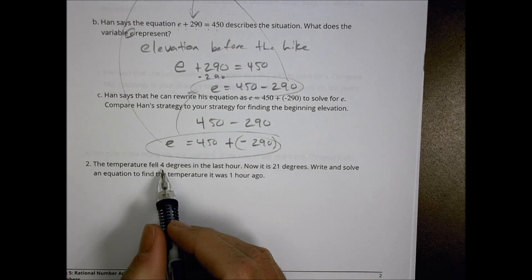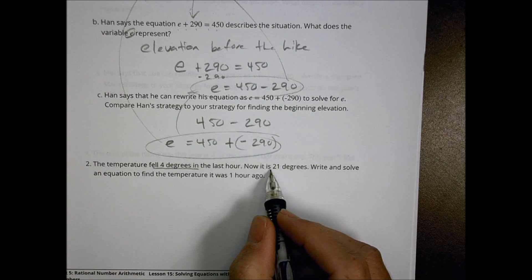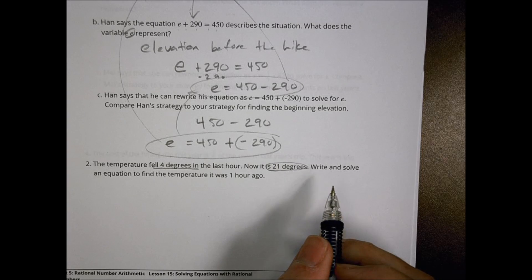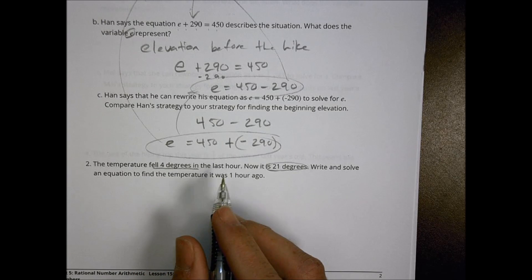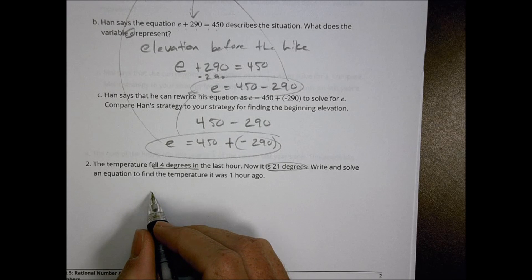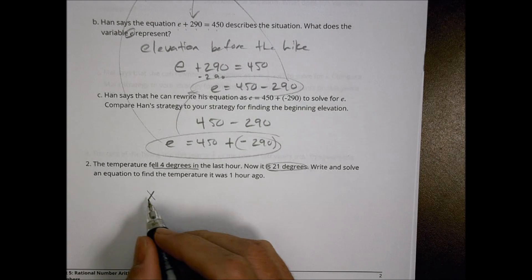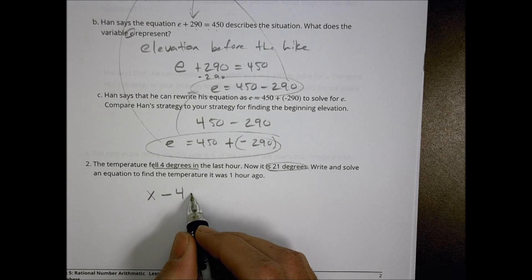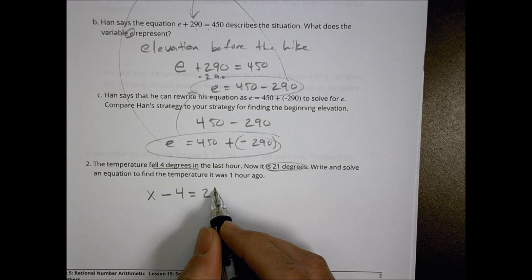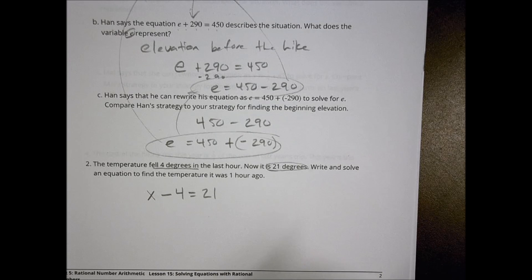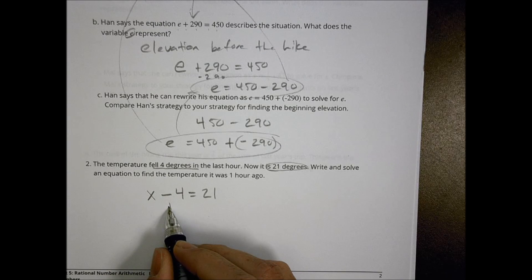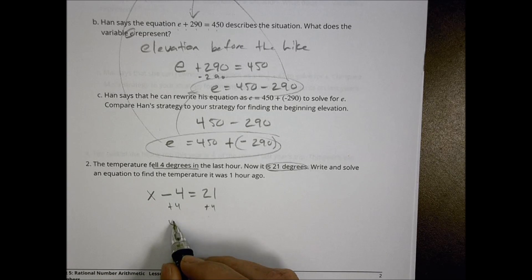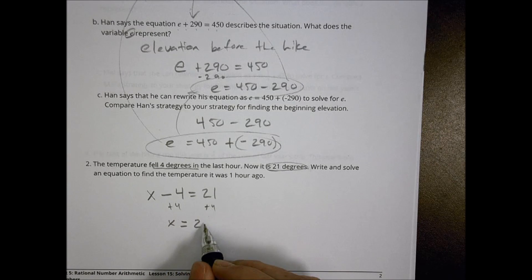The temperature fell 4 degrees in the last hour. Now it is 21 degrees. Write and solve an equation to find the temperature one hour ago. The temperature was something, it went down 4, and now it's at 21. So our equation is: some temperature minus 4 equals 21. To solve for x, we add 4 to both sides, and the temperature an hour ago was 25 degrees.